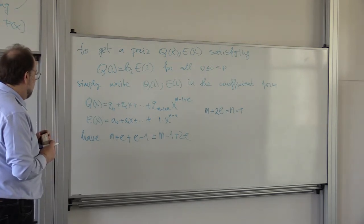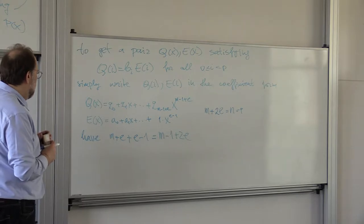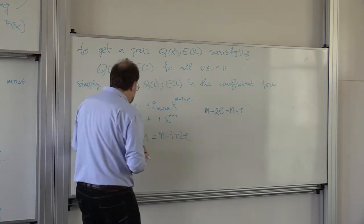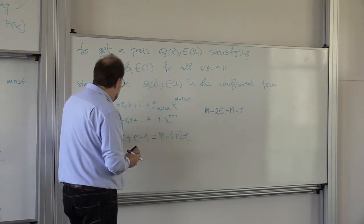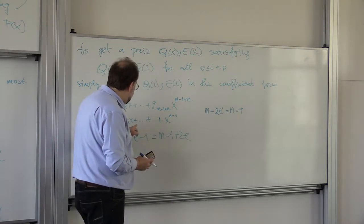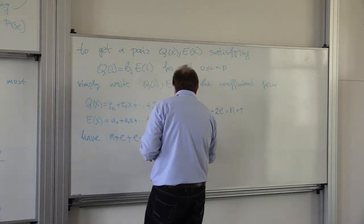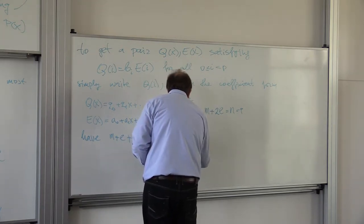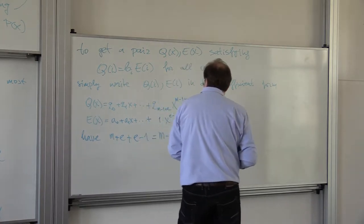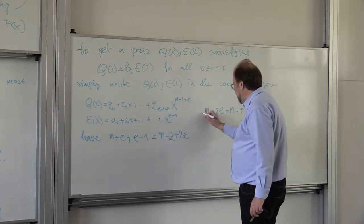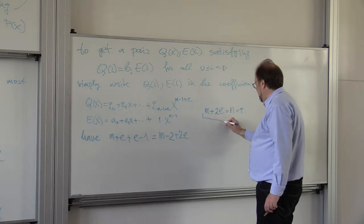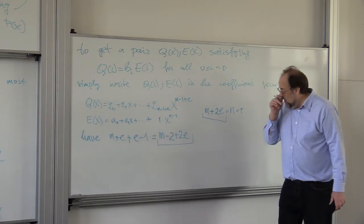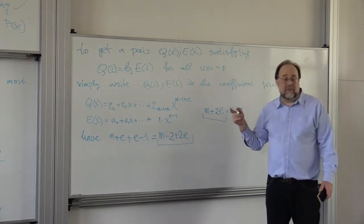Am I correct? This has only how many variables? This has e terms, one is missing, so it's e minus 1, so it's m minus 2 plus 2e many variables. So this is how many equations you have, and this is how many variables you have, and you simply solve the system of these equations.